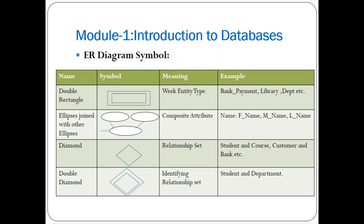The next symbol is an ellipse joined with other ellipses, called a composite attribute. A composite attribute is one whose attributes are divided into smaller individual parts. For example, in a student entity type, the student name can be divided into three parts: first name, middle name, and last name — represented as a composite attribute.